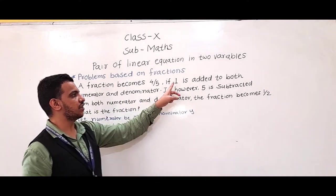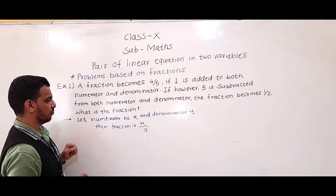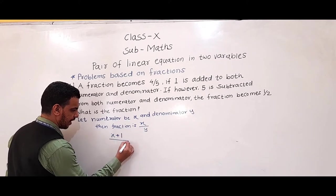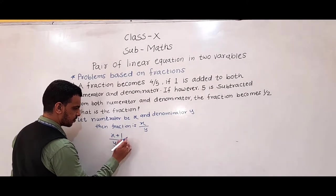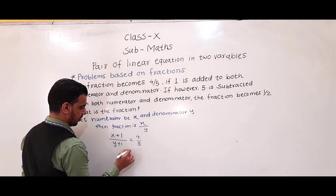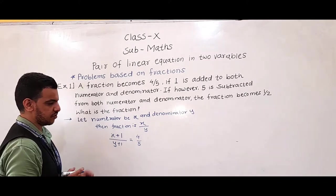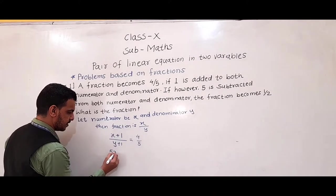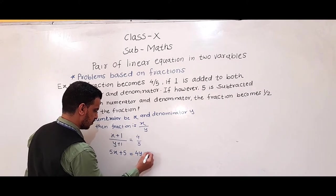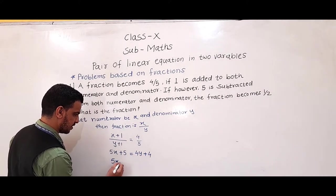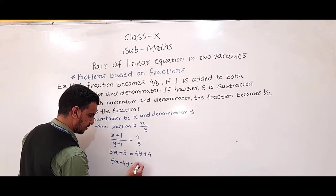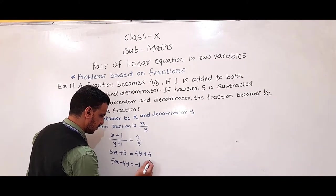Now, the first condition is given: if 1 is added to both numerator and denominator, then the fraction becomes 4 by 5. So this gives us (x+1)/(y+1) = 4/5. If we simplify by cross-multiplying: 5x + 5 = 4y + 4. This is equation 1.